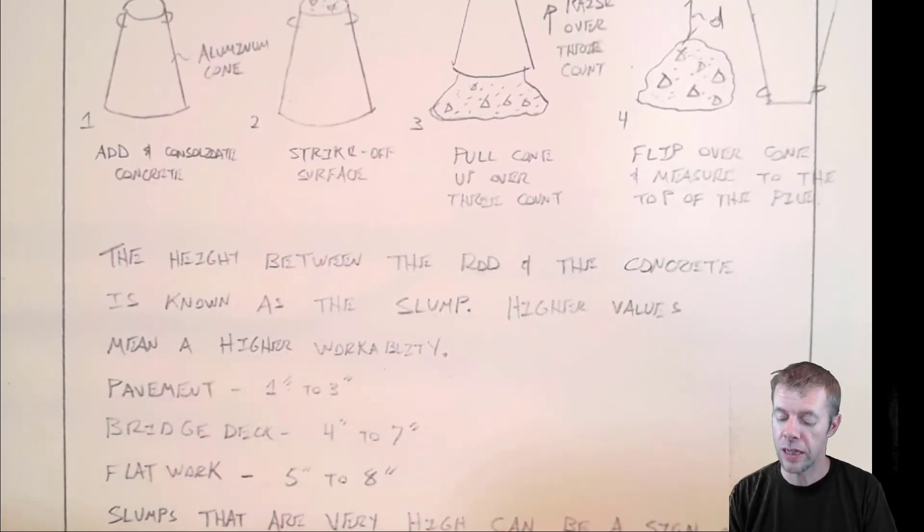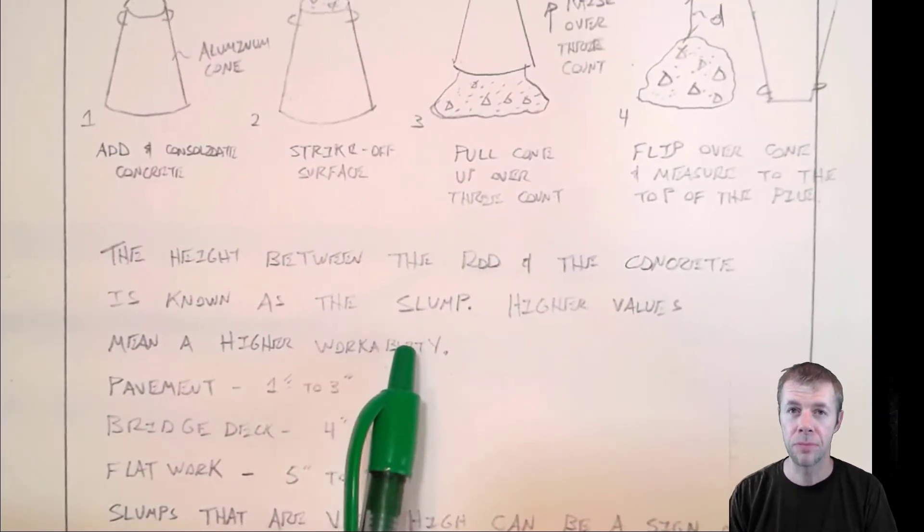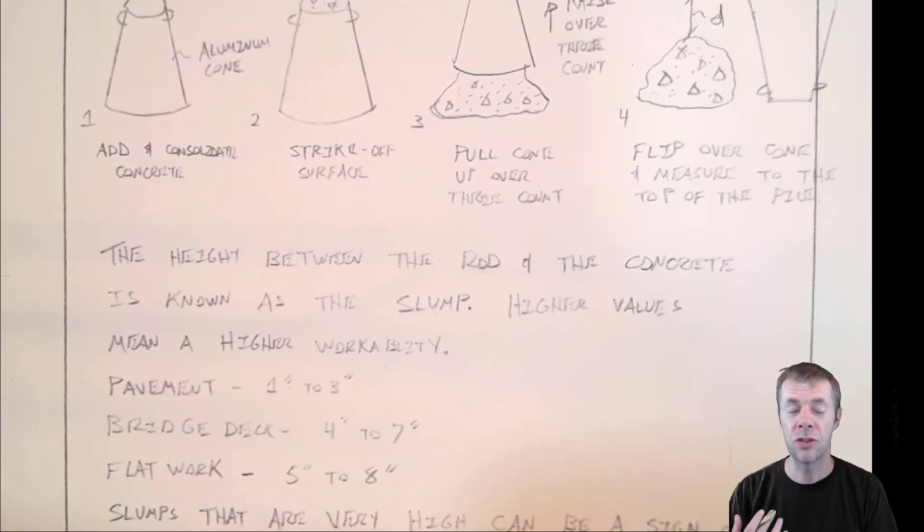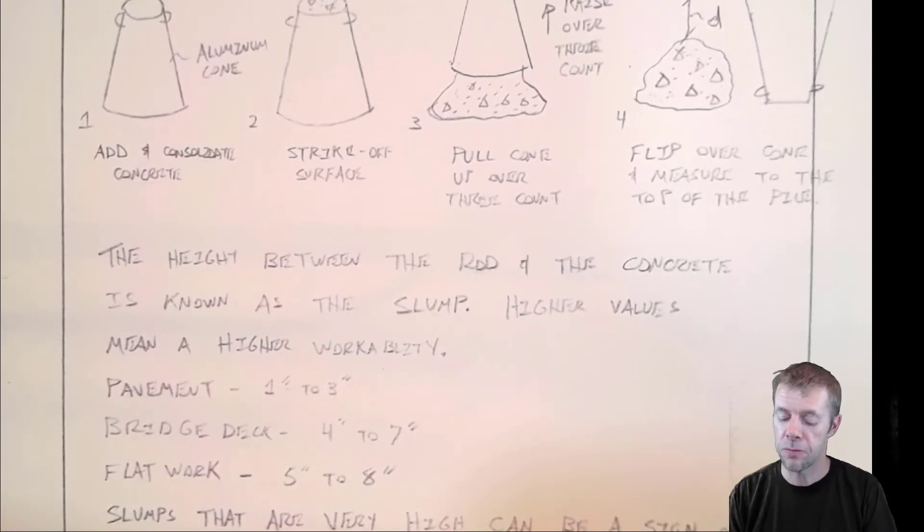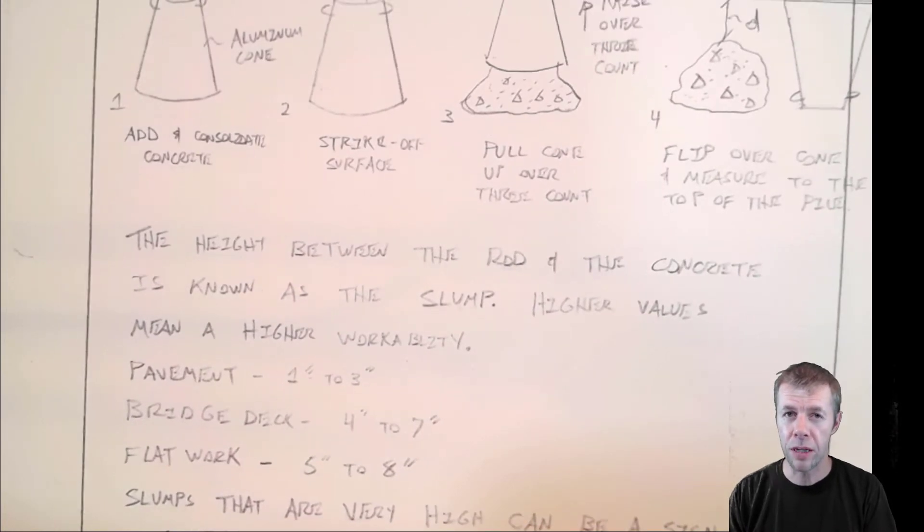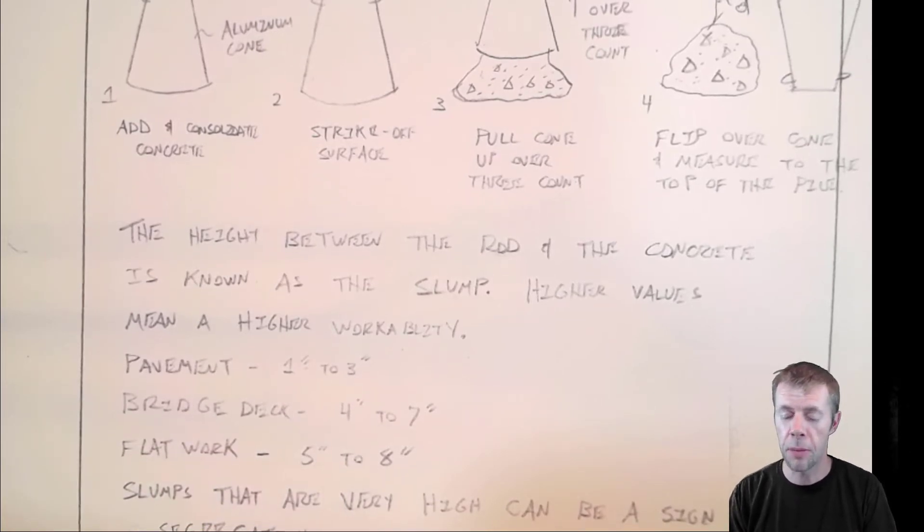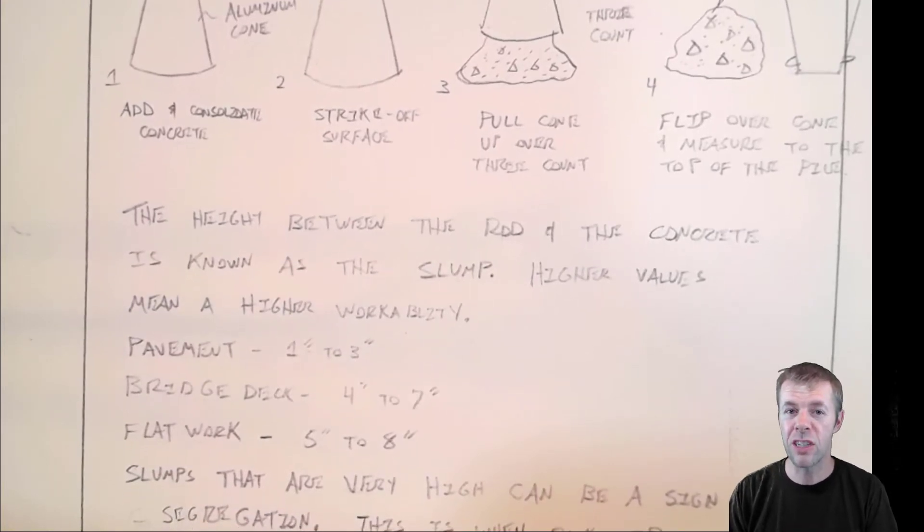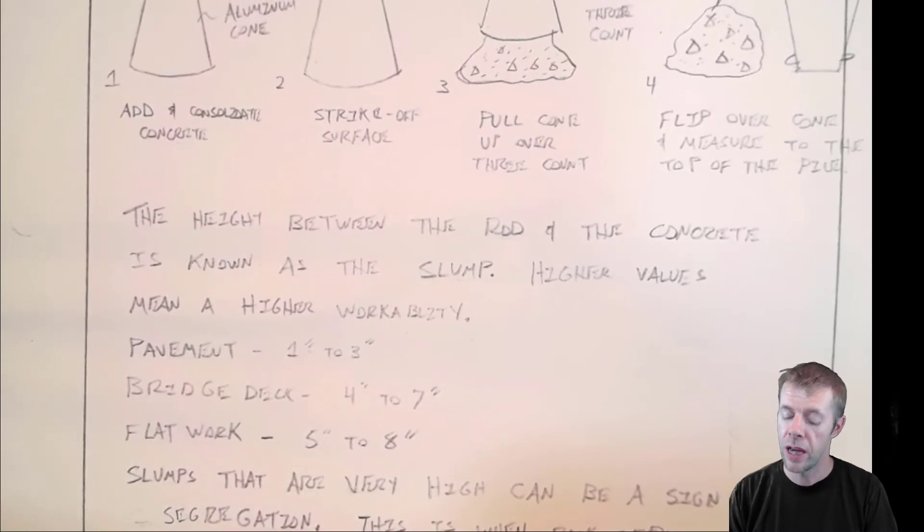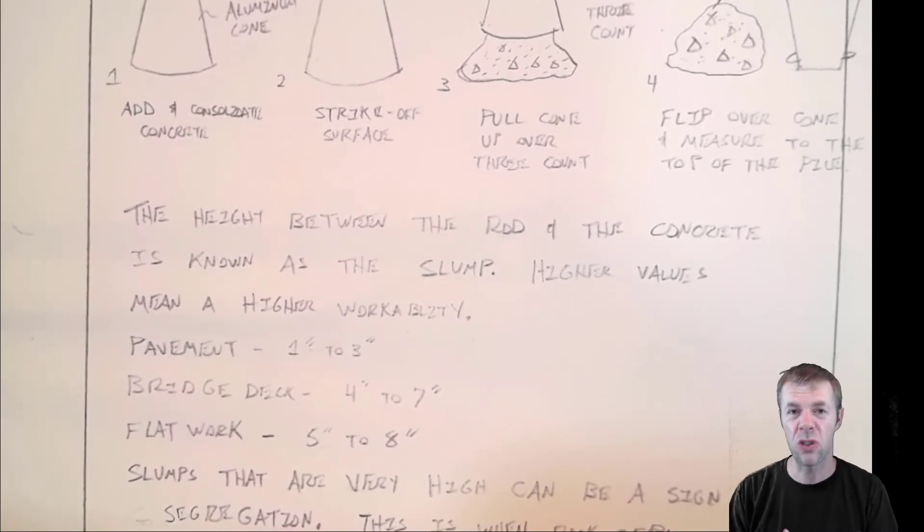The height between the rod and the concrete is known as the slump. And it's usually reported in some kind of length dimension. And higher values mean a higher workability. So if I have a pavement, it usually has a slump between one and three inches. If I have a bridge deck, it's usually got a slump between four and seven. Remember, one and three inches means it didn't fall very far. Four inches to seven inches fell a lot further. Something like flat works, that's like sidewalks or slabs. That's something more like five inches to eight inches.